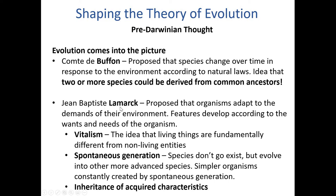A little later on, Jean-Baptiste Lamarck — perhaps you've heard of him, he's a pretty key figure in the train of thought of evolution — proposed that organisms adapt to the demands of their environment and that their features develop according to the wants and needs of the organism. Lamarck's evolutionary model relied on the ideas of vitalism, which is the idea that living things are fundamentally different from non-living entities, as well as spontaneous generation — the idea that species don't go extinct but instead evolve into more advanced species, and that simpler organisms must therefore be constantly created by spontaneous generation.